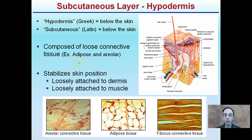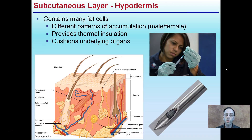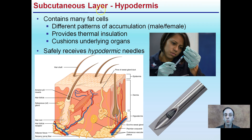The hypodermis is composed of loose connective tissue — adipose is an example. It stabilizes the skin position, loosely attached to the dermal and muscle tissue. Down in this lower region, it ties the upper epidermis and dermal layers together, and also contains veins, arteries, and some nerve endings. It contains fat cells with different patterns of accumulation based on sex, provides thermal insulation, and cushions underlying organs. You can remember the hypodermis by thinking of hypodermic needles — when you get an injection, it goes into this hypodermal layer.